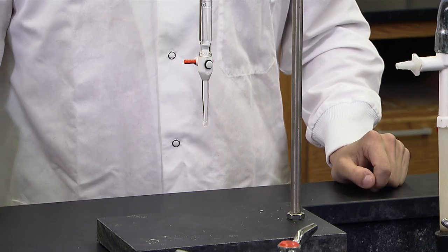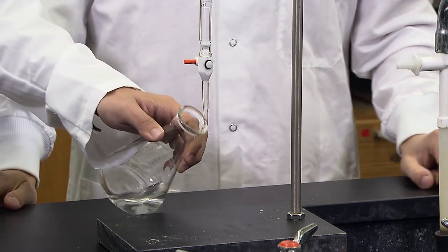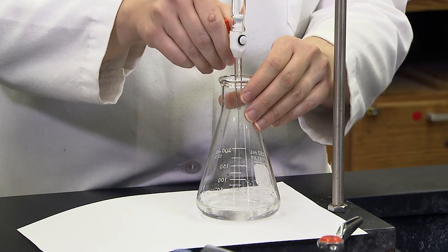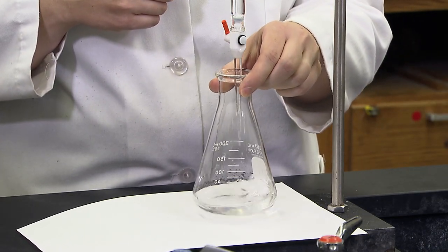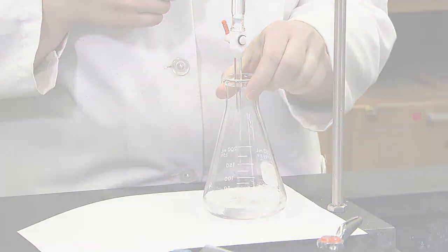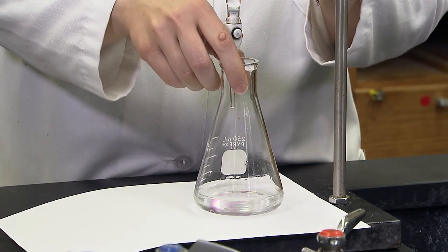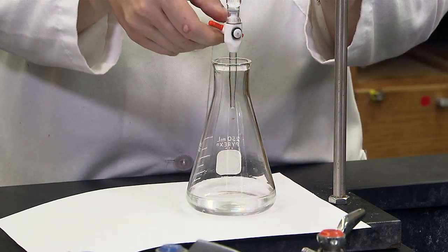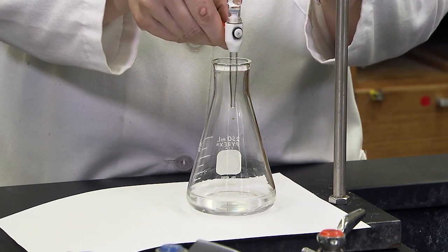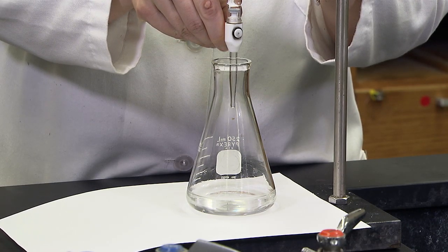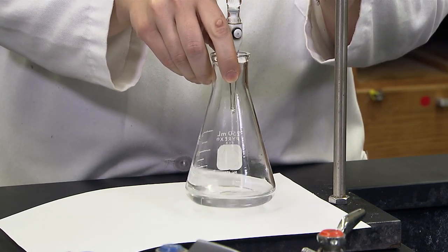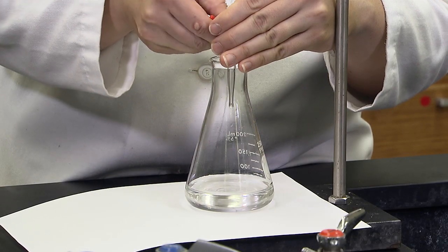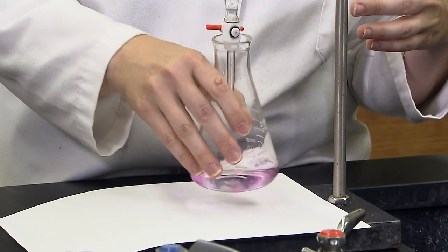We are now ready to titrate. A white paper will help us see the color change. You can add 1 to 2 milliliters of sodium hydroxide at a time and swirl, or you can adjust to a steady state of drops, swirling constantly. You can try either method. Just remember to add less sodium hydroxide at a time as the pink color starts to linger in the flask. Continue adding sodium hydroxide until the faint pink stays after swirling for 30 seconds.